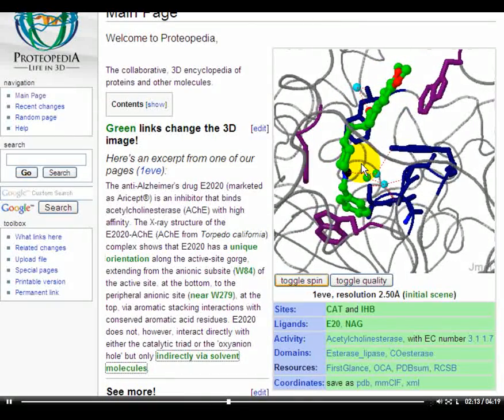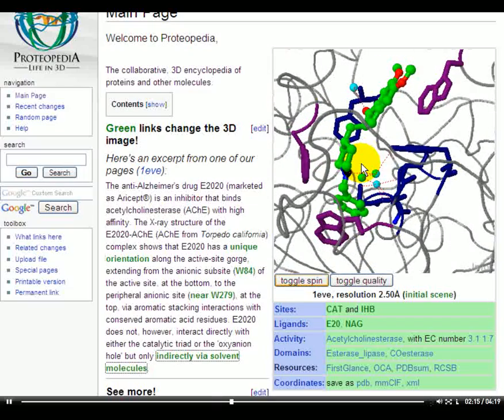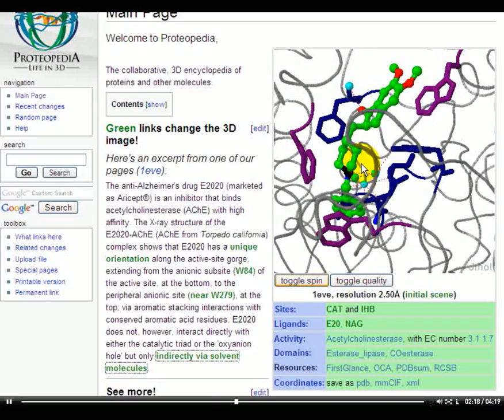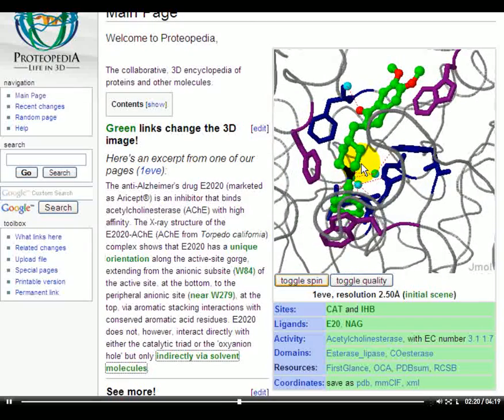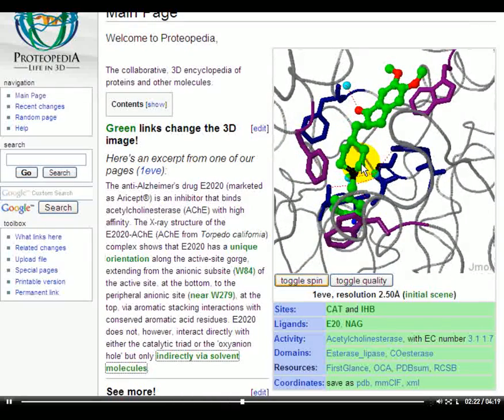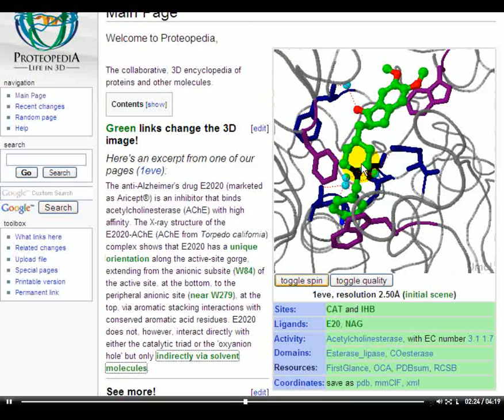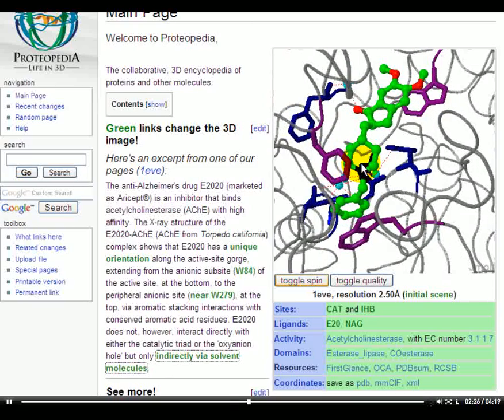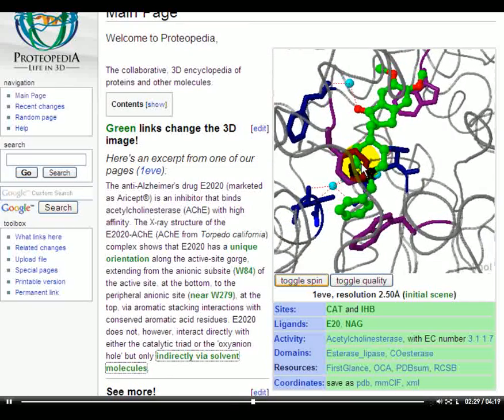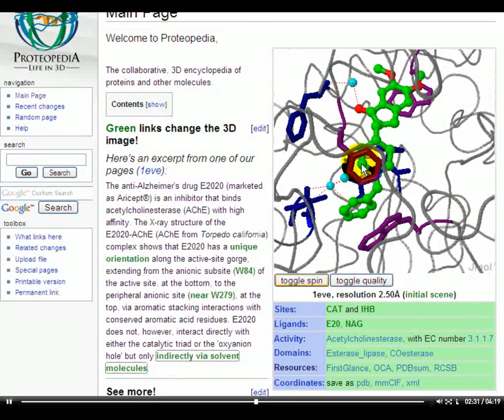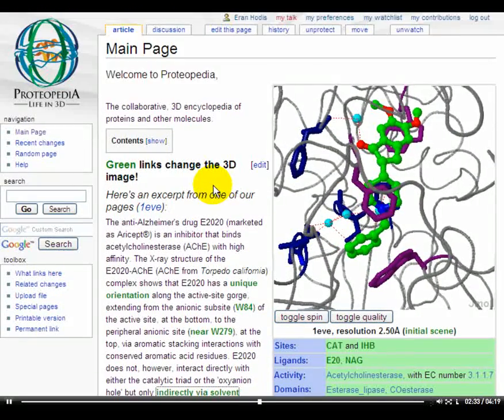The author does not take care of the animations but rather only sets a static scene by choosing an orientation, a color scheme, representation scheme, and maybe adding labels. The animations and transitions between green links are done by Proteopedia and the software behind it.